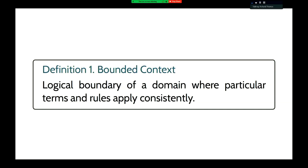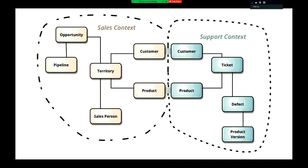Bounded context is one of the key things we borrow from DDD in terms of thinking about designing and identifying our services. It's trying to identify what's the boundary within our problem space — what's important here versus something that's similar but different that we don't want to worry about. So it's this idea of a scope where we have a consistent set of rules and terminology, and when we move into other parts of the customer domain they start treating things differently.